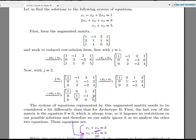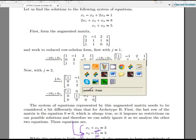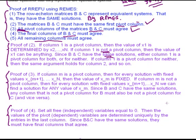We know that B and C correspond to the same solutions. That must mean that the values in the last column must be the same for matrix B and for matrix C - because otherwise, if they were different, you'd have different solutions for B and C. So that tells us that the last column of B and C must be the same. Now we're almost there. The last part is to show all remaining columns must agree. We've shown the pivot columns agree and we've shown the last column agrees. We need to show all the other columns - we can call them the free columns, or the columns corresponding to free variables.